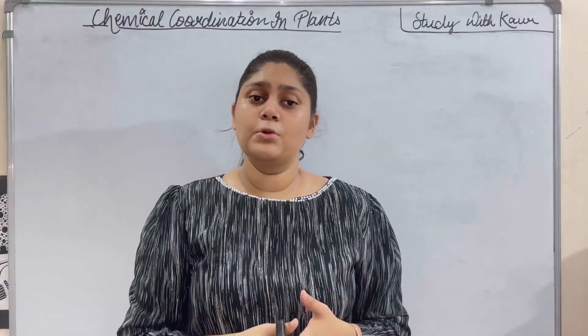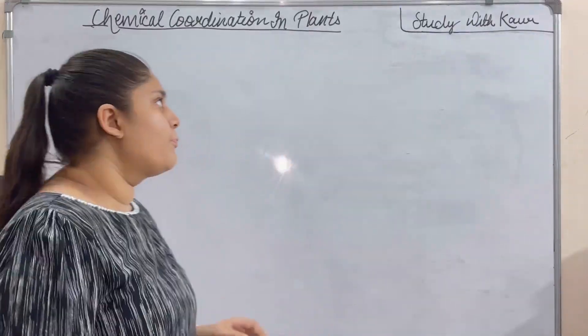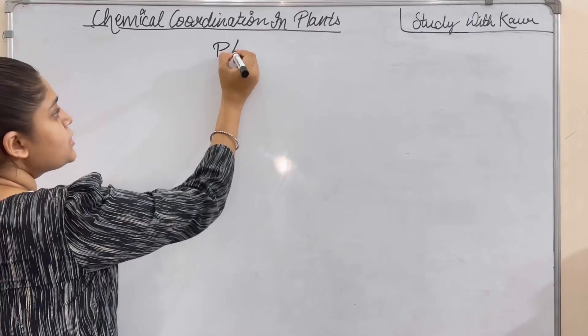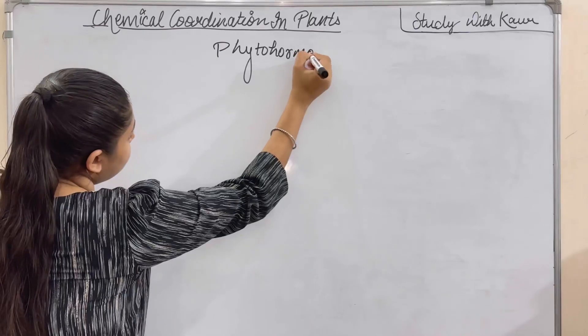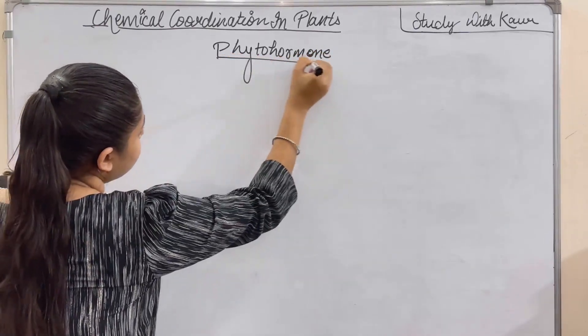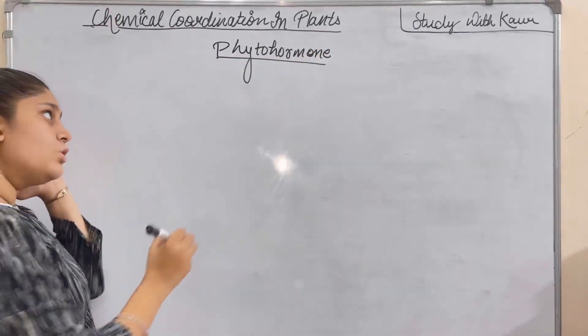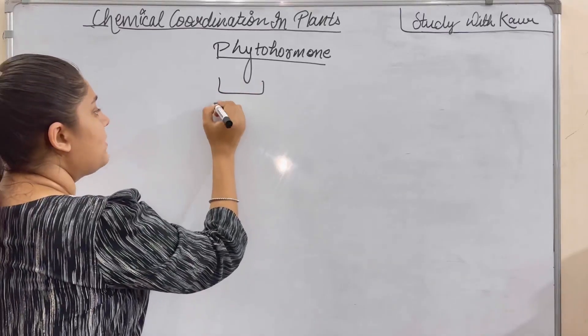Now that comes in human. Now talking about the hormones of the plant. So plant hormones are known as phytohormones. Clear. Phyto is plant.